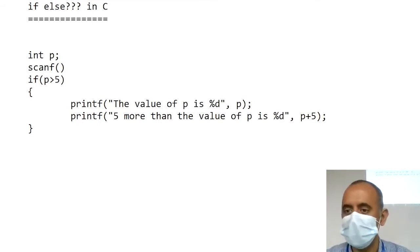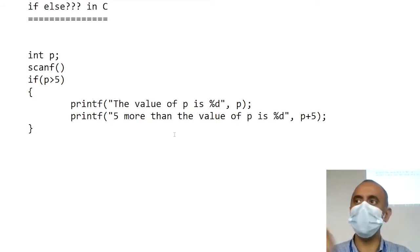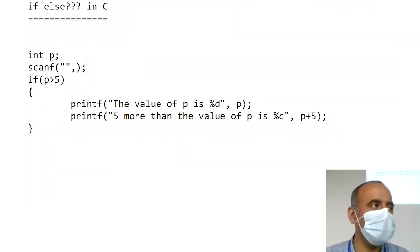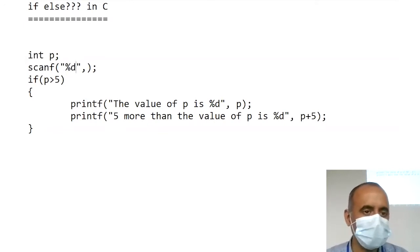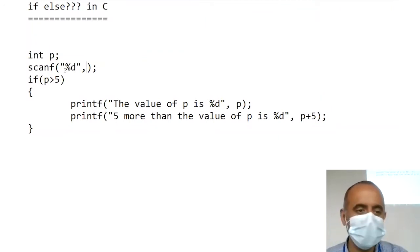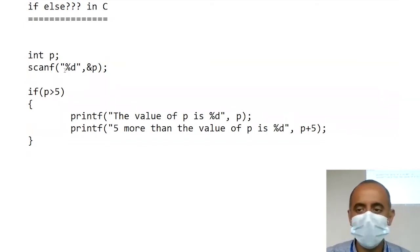Scanf is the function which scans the value from the keyboard — it inputs from the user. The format is that you give two parameters. In the first one, you have to tell the format specifier — it tells scanf what type of variable to pick. For example, for integer type you write %d. And then we mention not the variable name, but the address. I will explain the logic behind it.